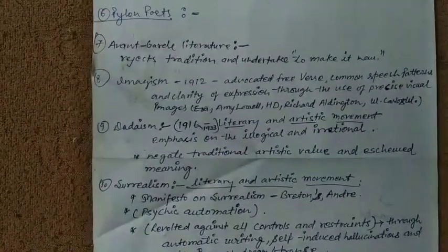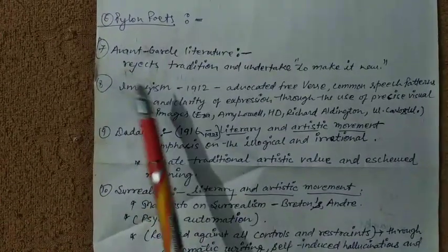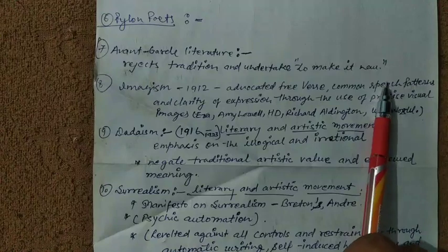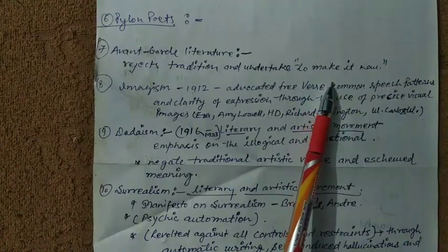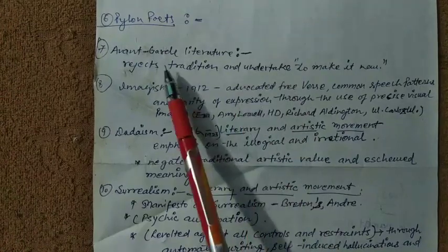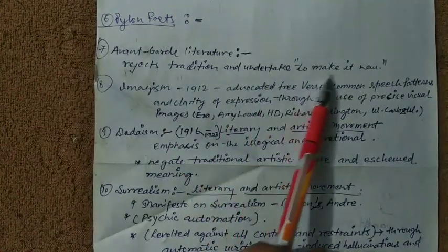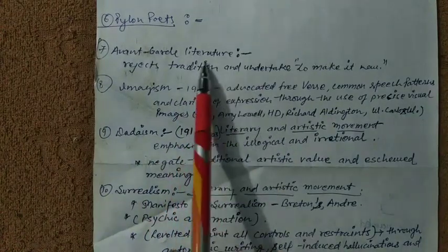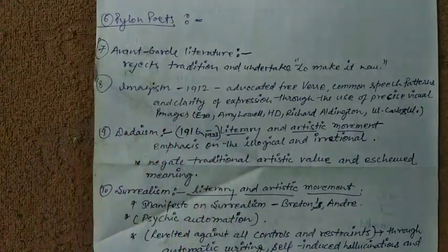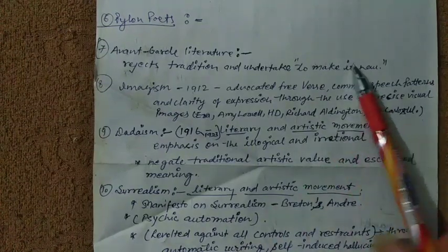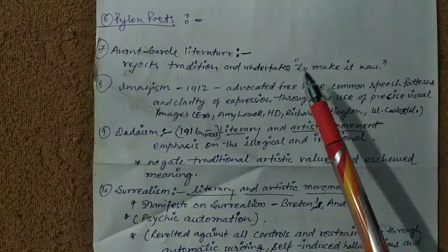Here we have avant-garde. Avant-garde literature rejects tradition and undertakes to make it new — like Ezra Pound. The avant-garde poets wanted to do more experiments and new things in literature, that's why the phrase came into existence: 'make it new.'